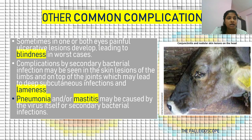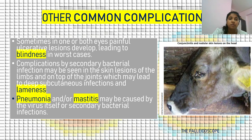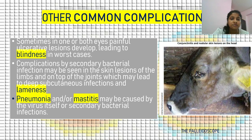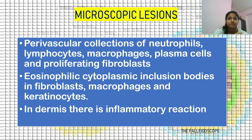Some other complications: sometimes in one or both eyes, painful ulcerative lesions develop, leading to blindness in worst cases. There is conjunctivitis and ulcerative lesions near the oral cavity. Secondary bacterial infections may be seen in skin lesions of the limbs and over joints, leading to deep subcutaneous infections and lameness. These secondary bacterial infections are the main reason why we use antibiotic treatments. Pneumonia and mastitis may be caused by the virus itself or secondary bacterial infections; since there is a predilection site near the udder, mastitis can occur.